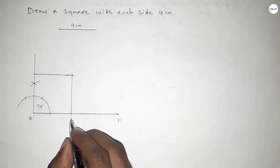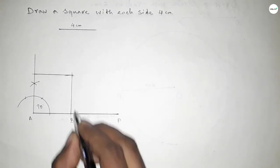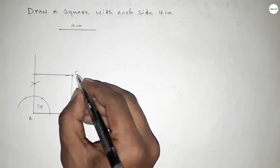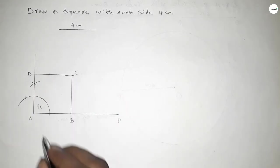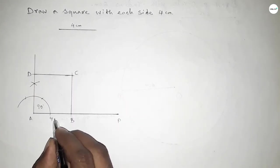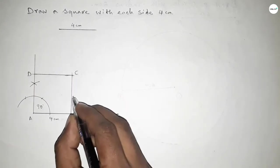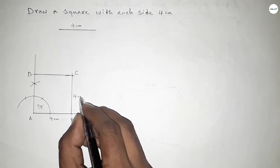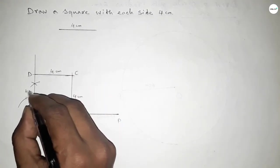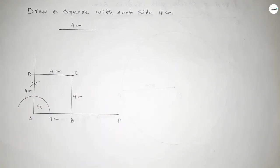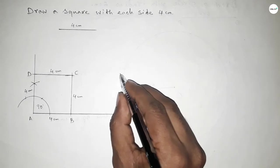Now joining this side, then joining the next side. This is point B, this is point C, and this is point D. Each side is equal to 4 centimeters — this side is 4 cm, and this is also 4 cm.